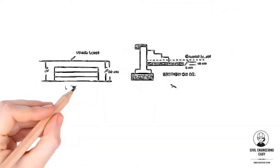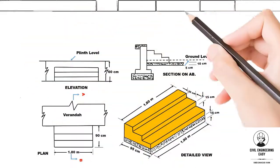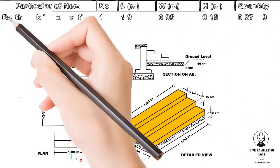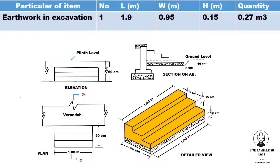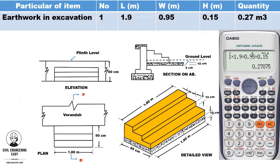First we need to find out the earthwork in excavation. The length of excavation for the step is 1.9 meter, width of excavation is 0.95 meter, and the depth taken from the ground level is 5 centimeter plus 10 centimeter, equal to 0.15 meter. Multiply the length with width and height to get the total excavation.